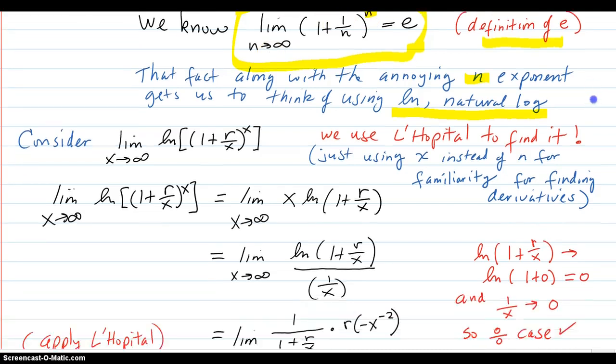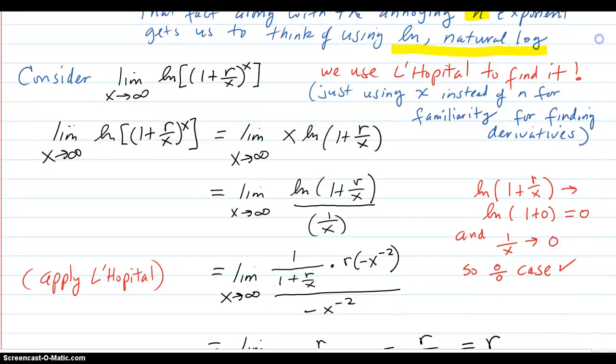So we do it. So I say consider this limit here. I'm only using X because we're headed toward using L'Hopital's rule, and I just want you to have the familiarity of X when you're differentiating instead of the N. But that's the only reason. Otherwise, there would be an N there.